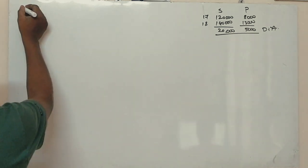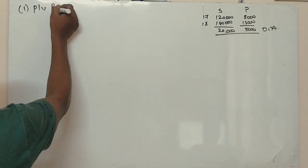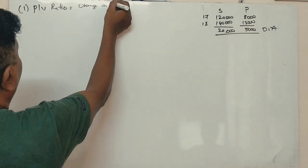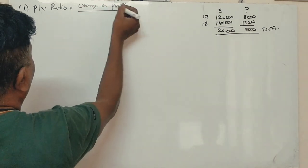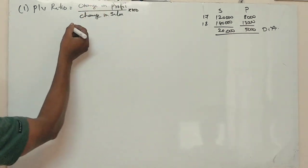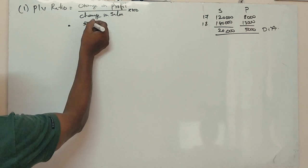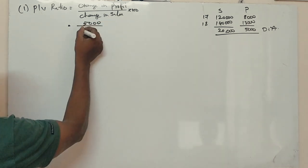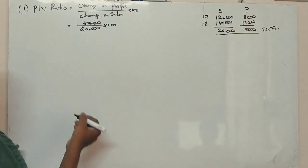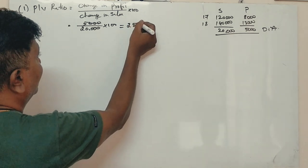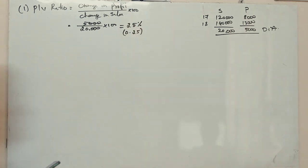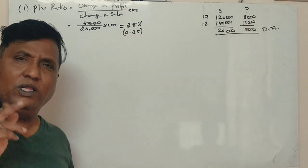How are you going to calculate? PV ratio equals change in profit divided by change in sales into 100. Change in profit 5,000 rupees, change in sales 20,000. Cancel the zeros, 5 divided by 20 gives 25%. We can present it as 0.25.